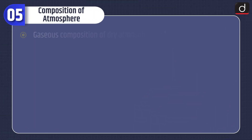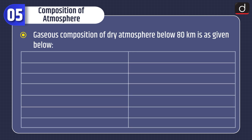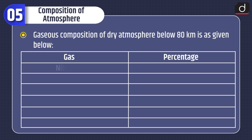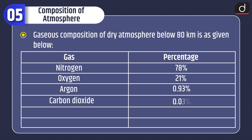Now moving on to the composition of atmosphere. The gaseous composition of dry atmosphere below 80 km is as follows: Nitrogen 78%, Oxygen 21%, Argon 0.93%, Carbon dioxide 0.03%, Neon 0.0018%, and Helium 0.0005%.